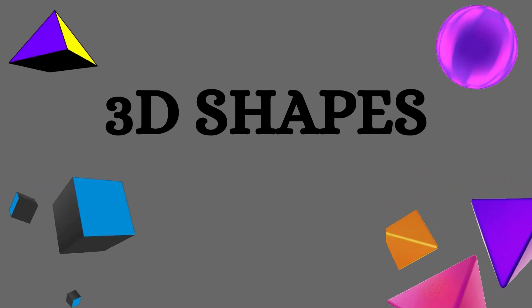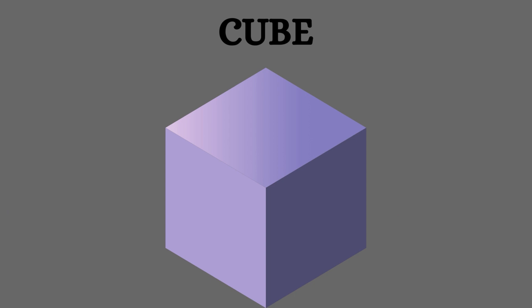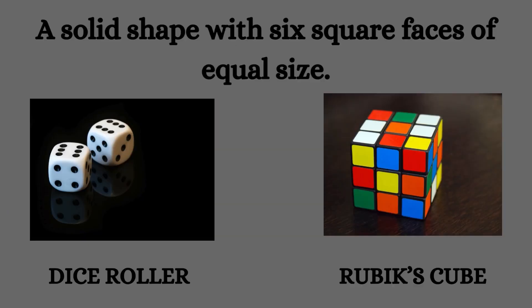3D Shapes: Cube. A solid shape with six square faces of equal size. Examples include a dice roller and Rubik's Cube.